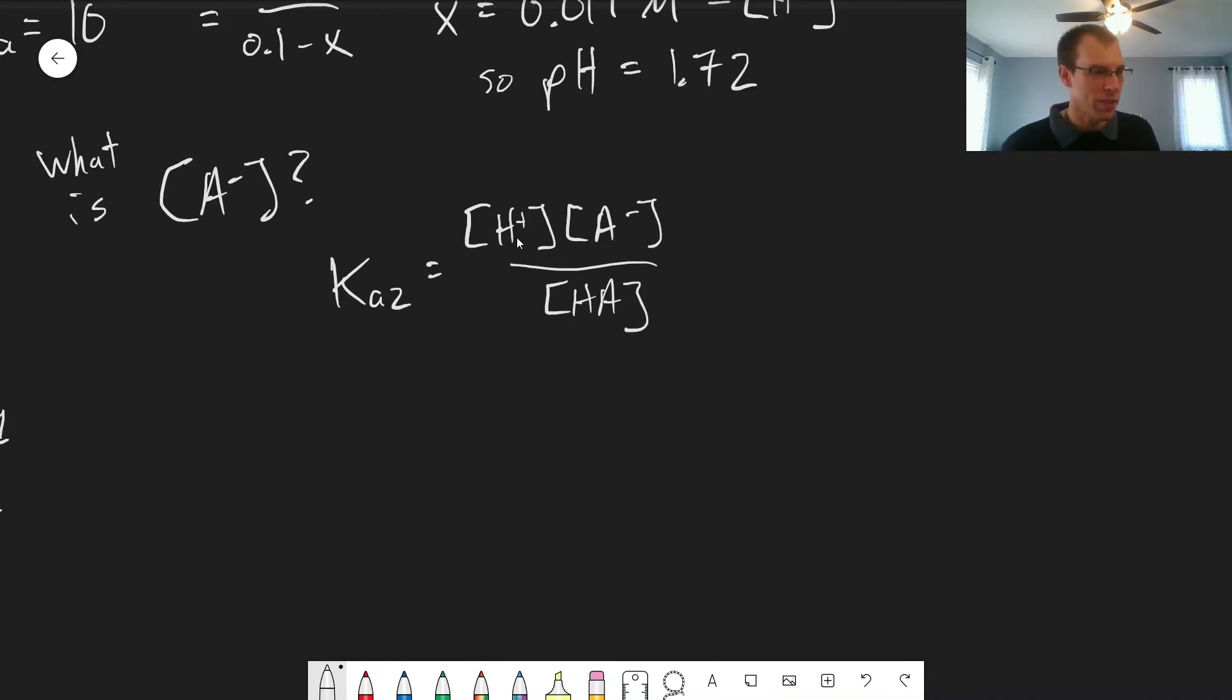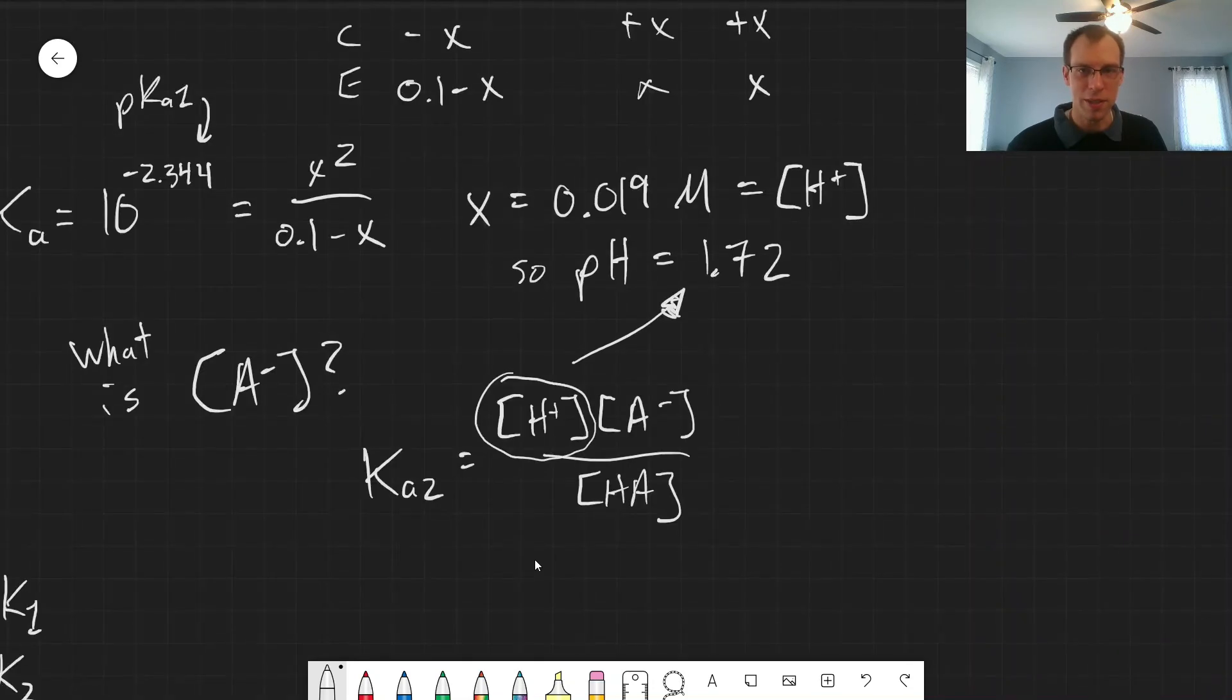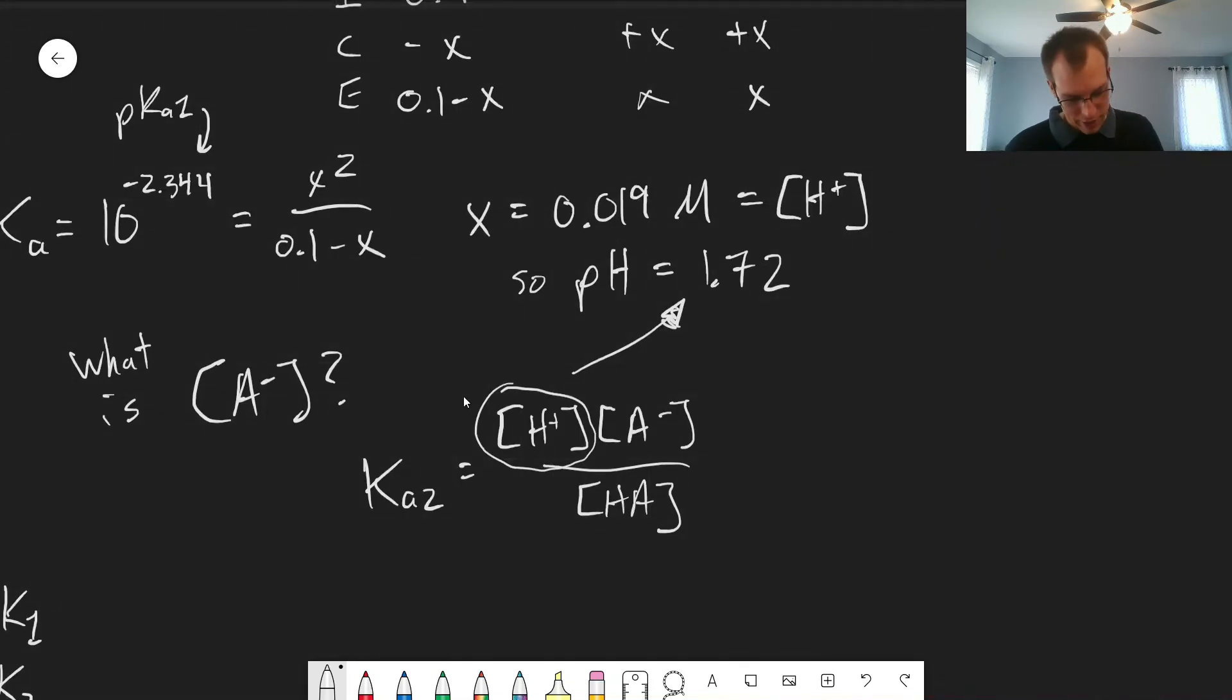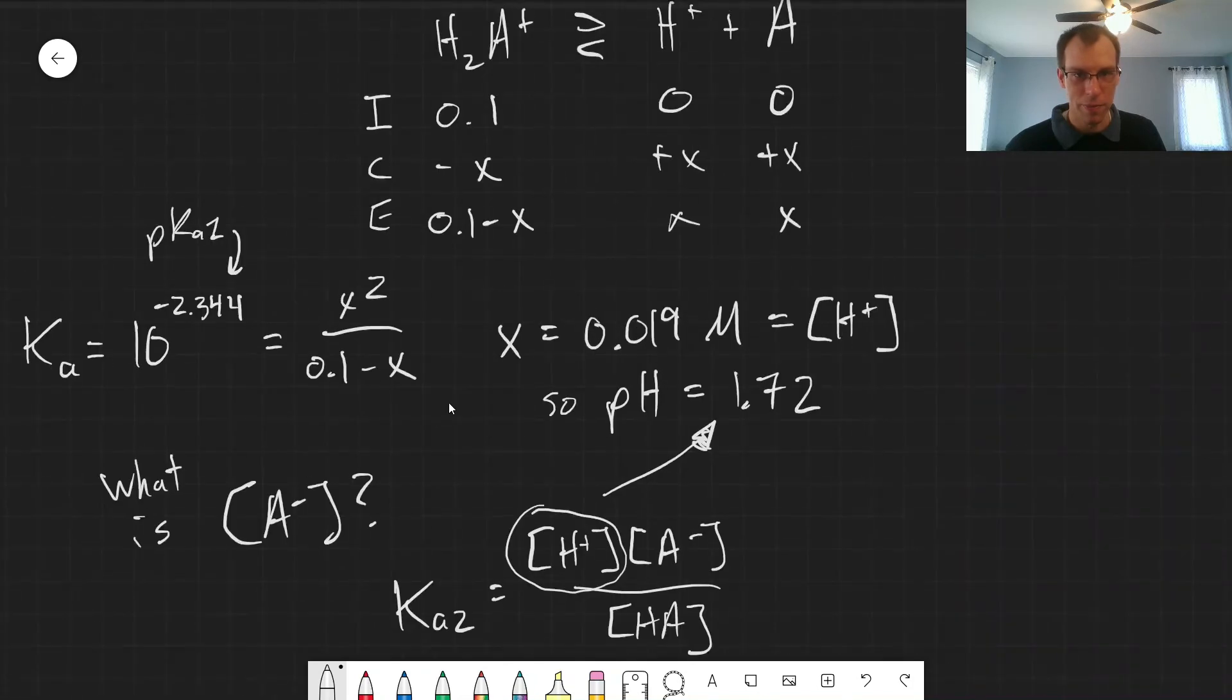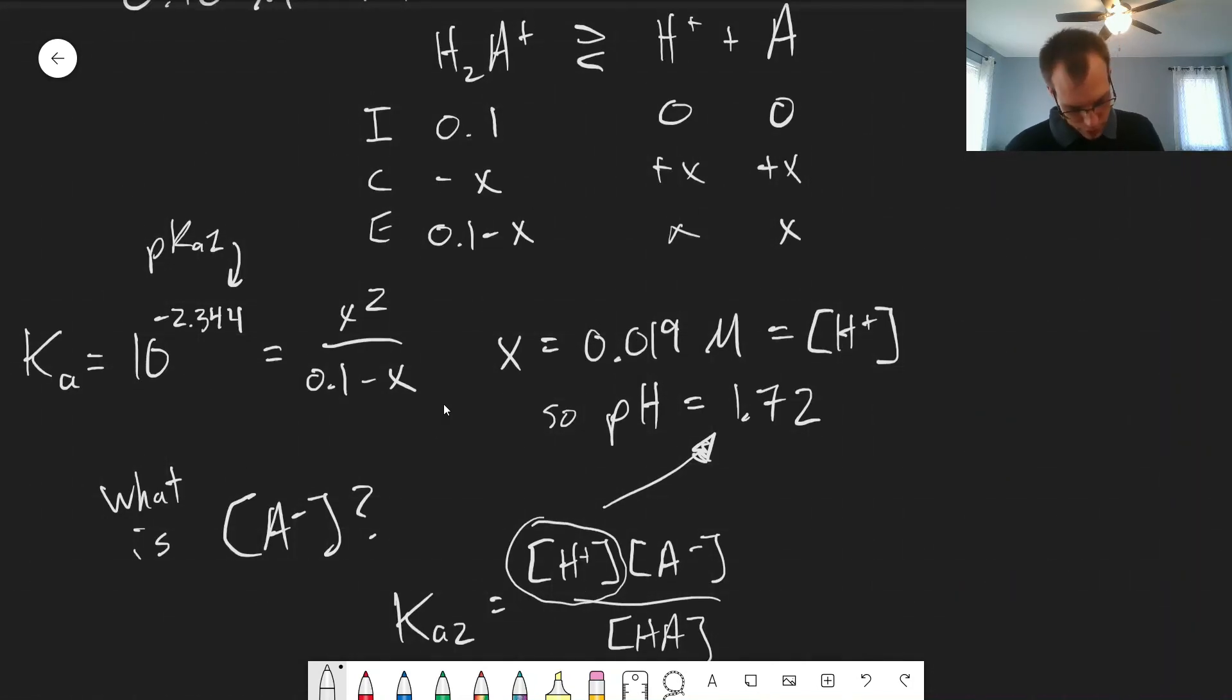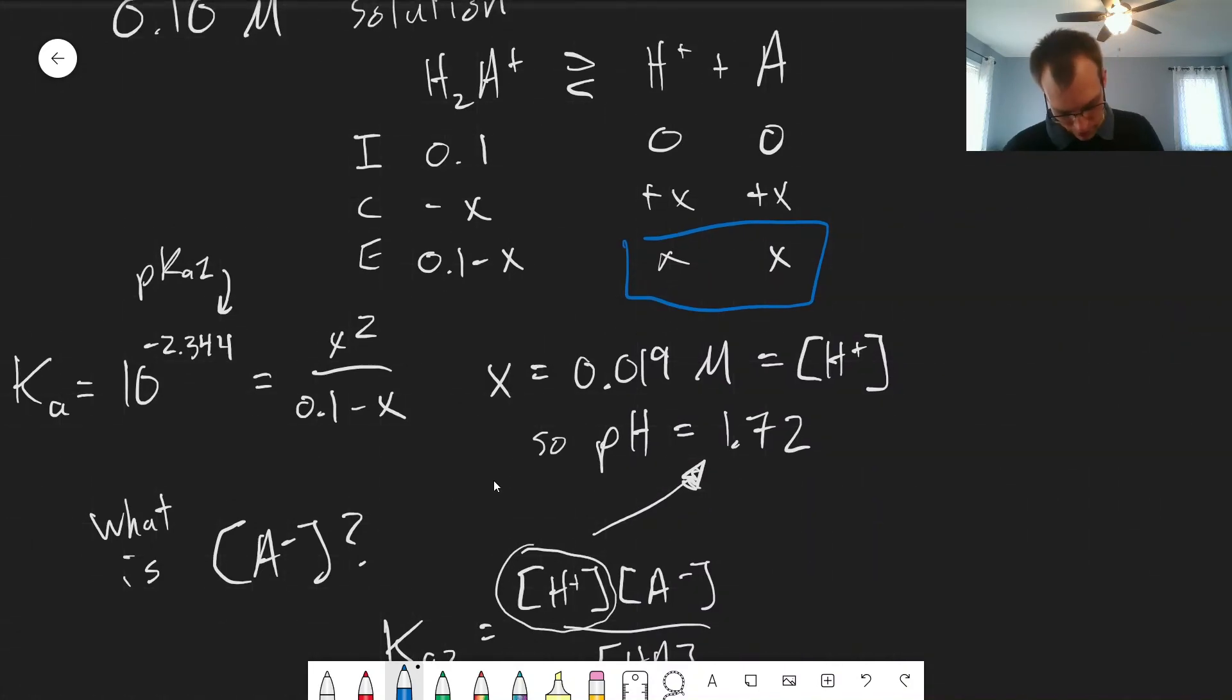But we already know a couple of these values. We know the concentration of H plus. That's just going to be what went into our pH calculation here. And actually, the concentration of HA is the same, because all the H plus that was produced also produced HA. If we go back up to this equation here, X here represented both concentrations, both the concentration of H plus and the concentration of HA.